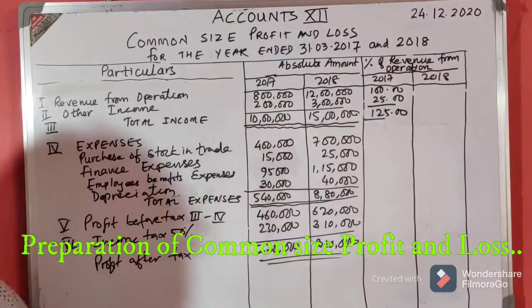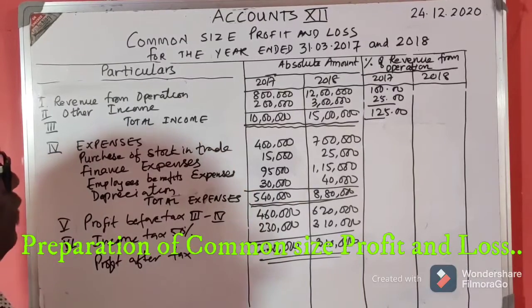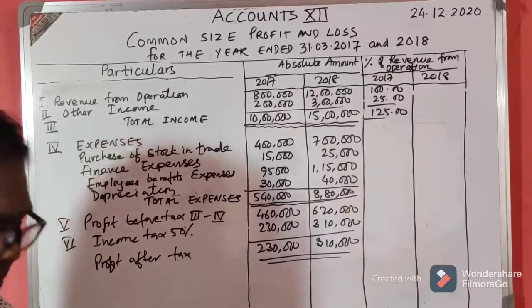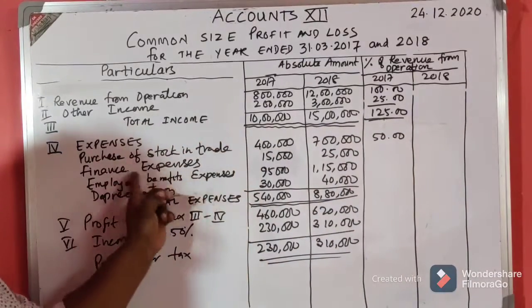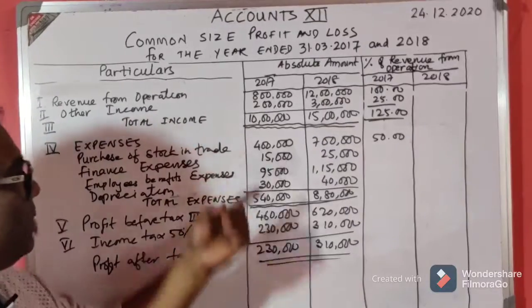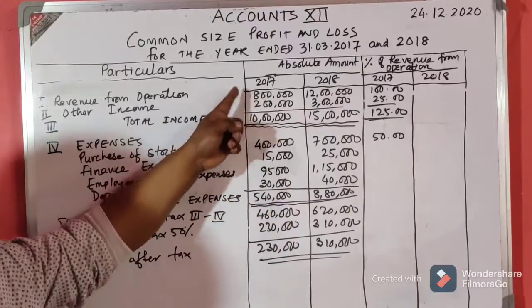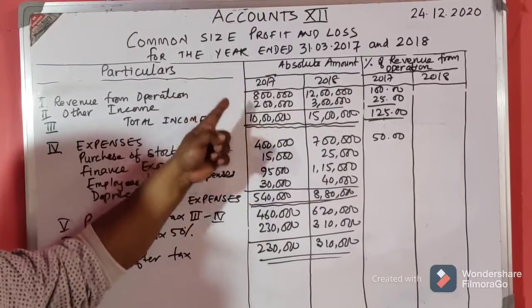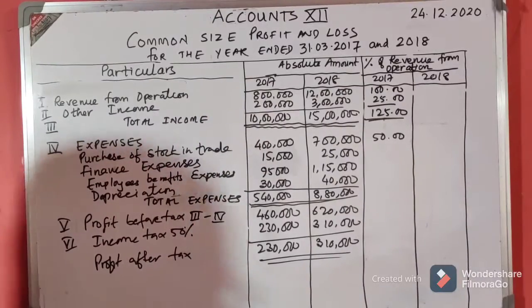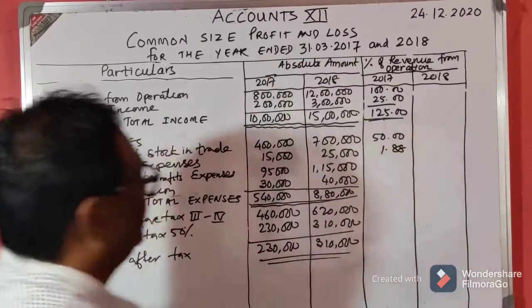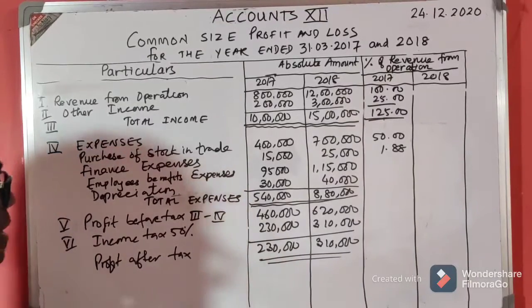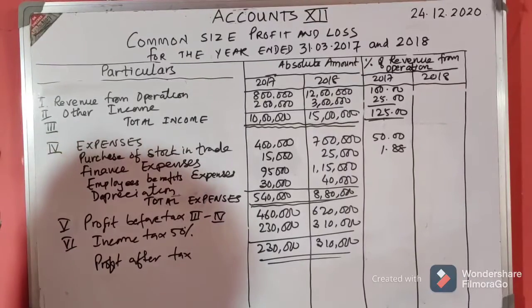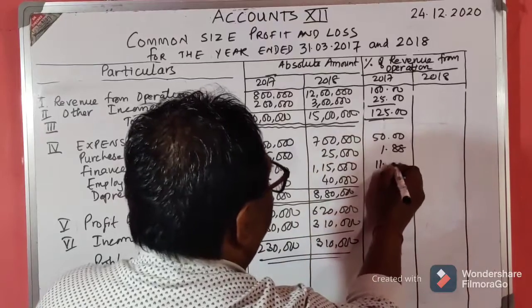Purchase of stock in trade is 4 lakhs. 4 lakhs divided by 8 lakhs — 4 by 8 is half — gives 50 percent. Financial expenses are 15,000: 15,000 divided by 8 lakhs into 100 gives 1.88 percent. Employee benefit expenses are 95,000: 95,000 divided by 8 lakhs into 100 gives 11.88 percent.